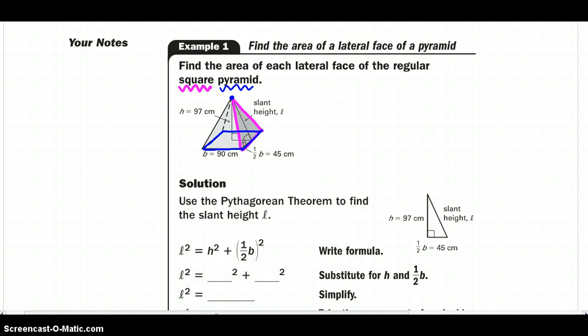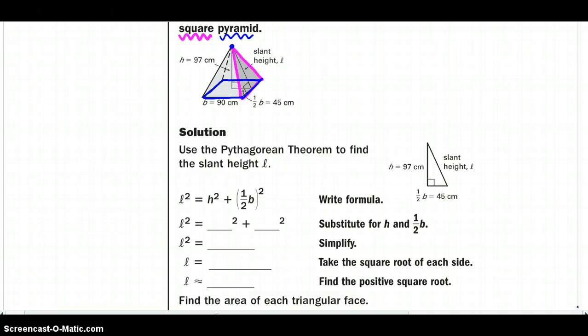All righty, so wanting to find that lateral face's area, I can use the Pythagorean theorem to find it. And they have created that height right there and they have taken that triangle out over here and labeled it. So we'll just plug in the information. So our slant height, our hypotenuse, equals our height, 97 squared, plus one half the base, which would be 45 squared. So I would get L squared equals 11,434, and I'm going to square root both sides to get that L by itself, and I would get plus or minus the square root of 11,434, which is approximately 106.93. So that would be my L.